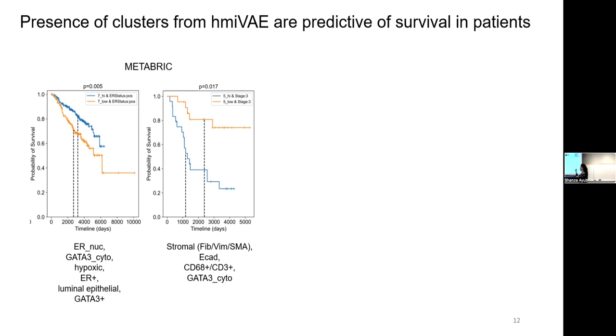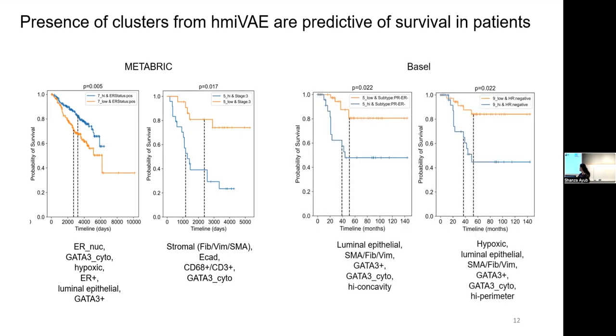And then for cluster five, patients that had a low prevalence of cluster five cells in their image had a better survival. And I was also able to find two clusters in the Basel cohort that their low presence in their cell populations tend to have a better survival, especially for patients that had the hormone negative subtype. So these clusters have some sort of prognostic relationship.